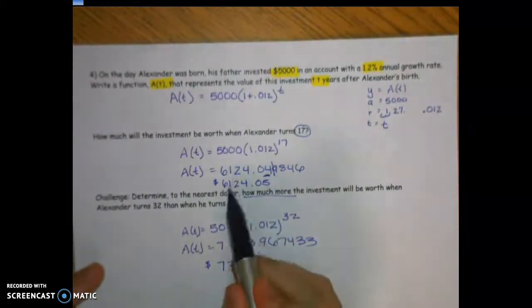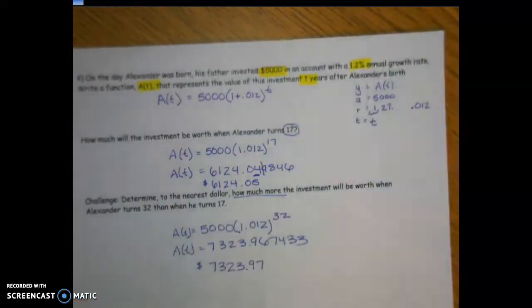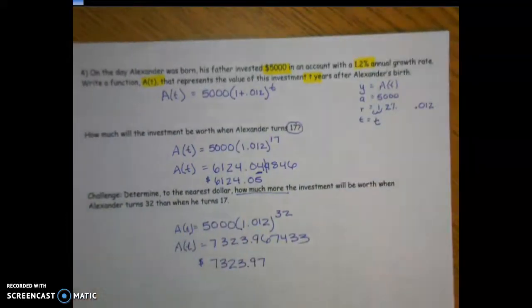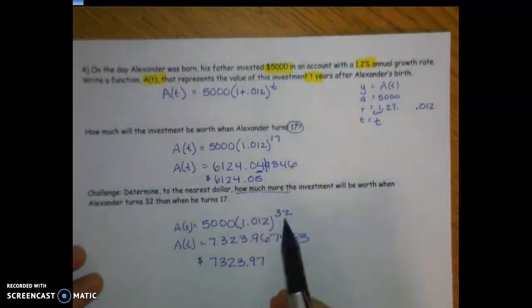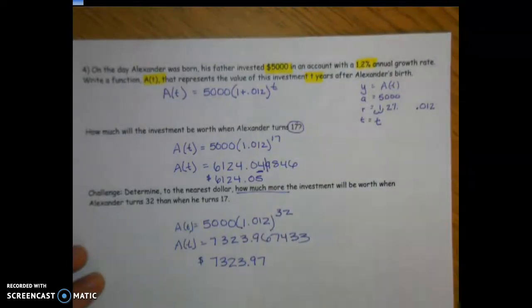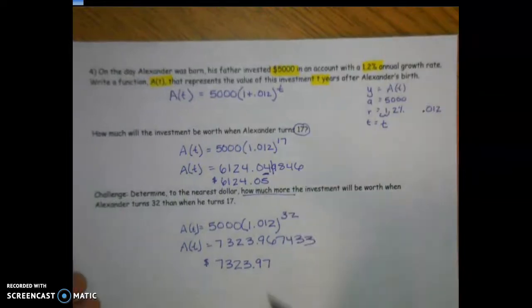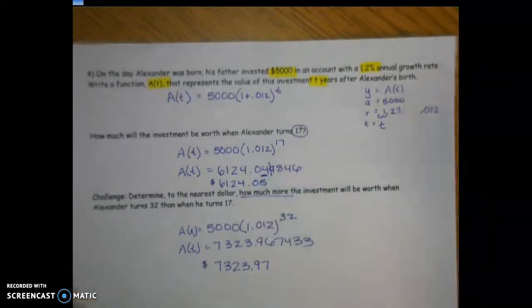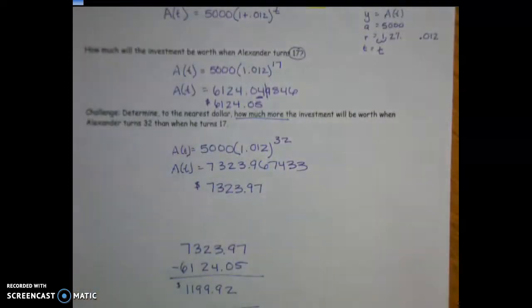I plugged t = 17 into the calculator to get the value, then rounded. The challenge asks how much more it would be worth when he turns 32, so I changed t to 32 and calculated that amount. To find how much more, subtract the two values. Rounded to the nearest dollar, the answer is $1,200.